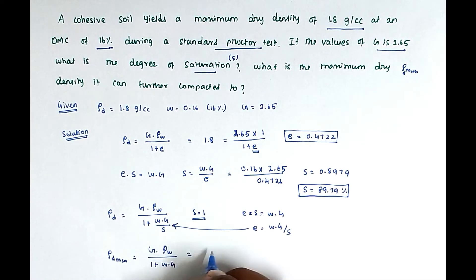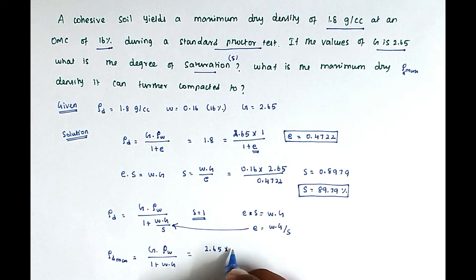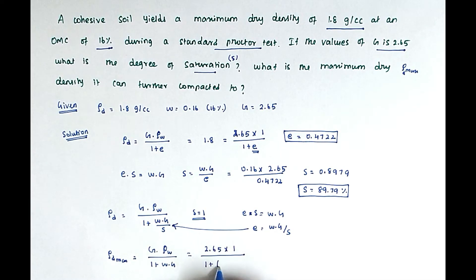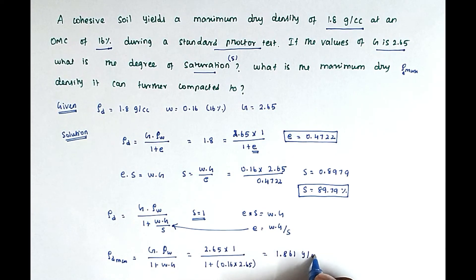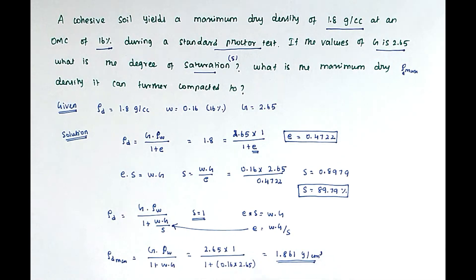Substituting all values: ρD_max = 2.65 × 1 / (1 + 0.16 × 2.65). Solving these, we get the value of 1.861 gram per centimeter cube. So this is the final answer — the maximum dry density. This is the method we can solve the compaction problem. We will see you again in the next video. Thank you.